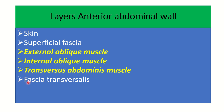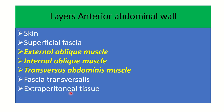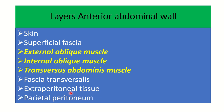After the muscles, we have fascia transversalis, then extraperitoneal connective tissue, and finally parietal peritoneum. So in total, the anterior abdominal wall has eight layers.